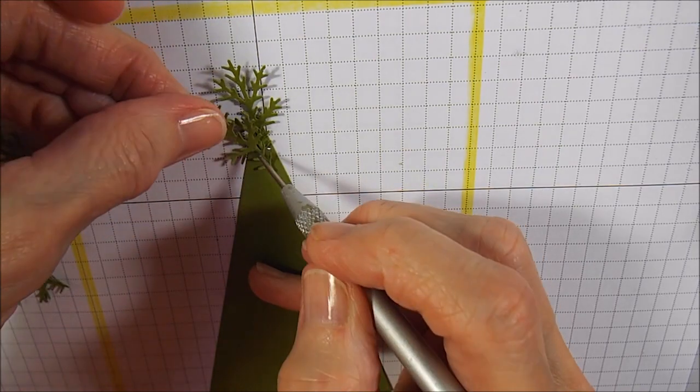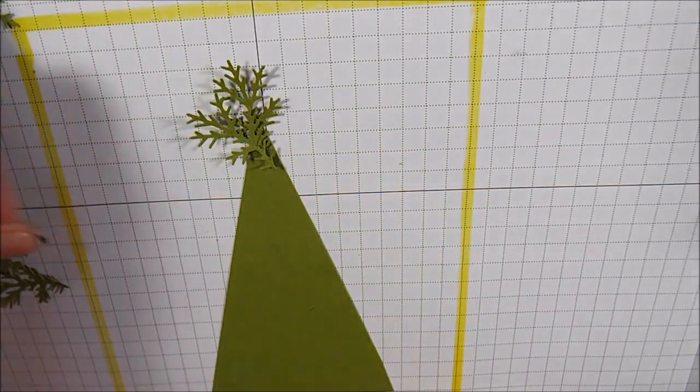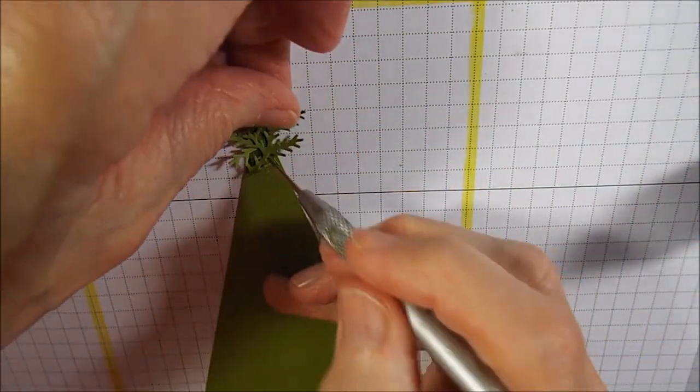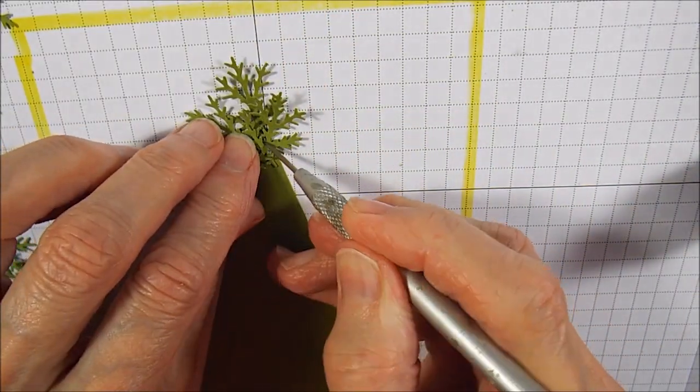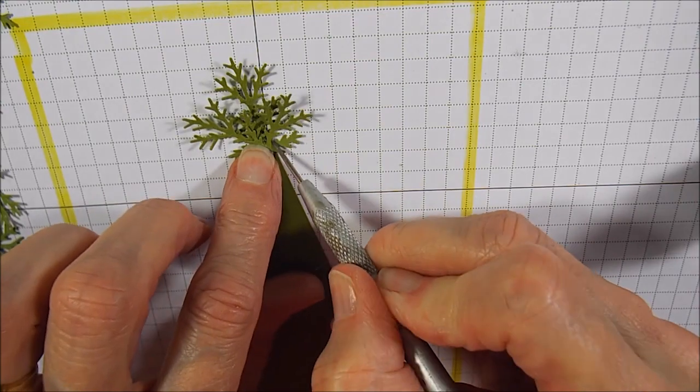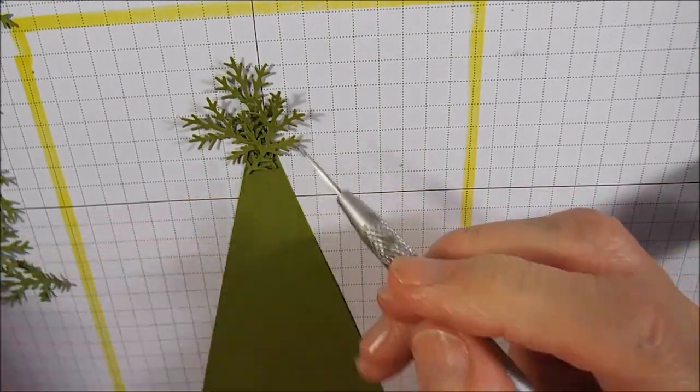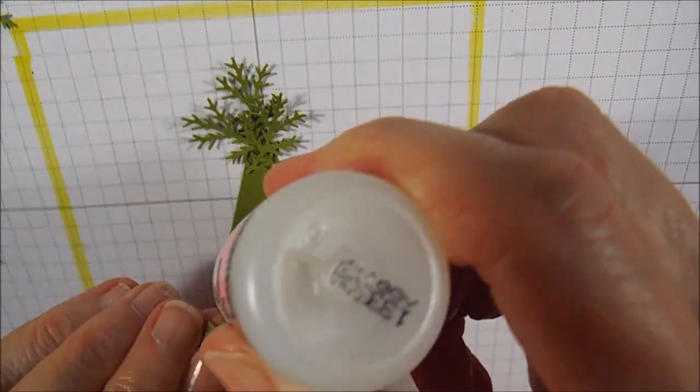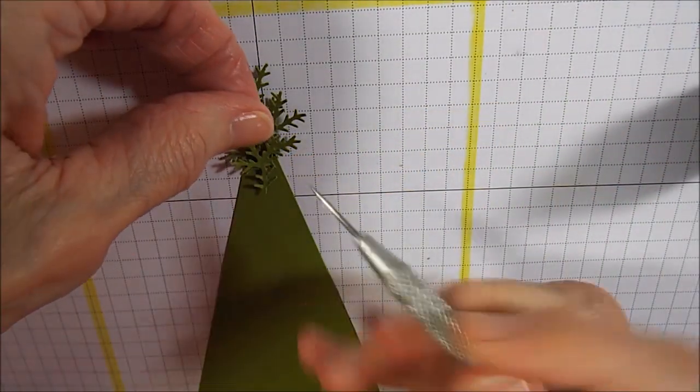I started here by adding my first branch straight up. The next branch I put to the left and the third branch to the right. And I'm going to continue this pattern all the way down the tree. Straight up, one to the left, one to the right.